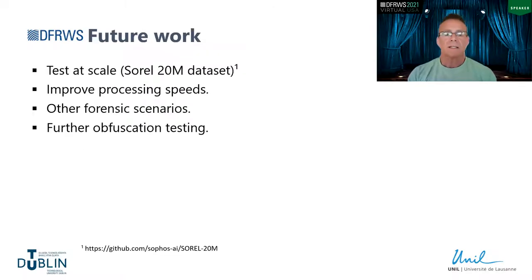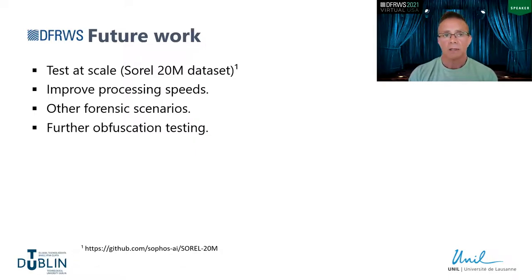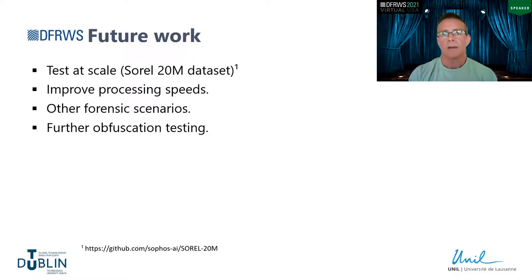For future work, to test at scale I'm attempting to download the SOREL dataset, which is 8 terabytes — so far I've only managed 2.5 terabytes before the connection fails, but I hope to complete this over the summer. We'd like to improve processing speeds, possibly using a different language or C bindings in Python. EHF could also be applied to other forensic scenarios such as file fragment identification. And further obfuscation testing — on packing, encryption, and other methods — is planned to see if EHF can detect those obfuscated samples.